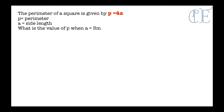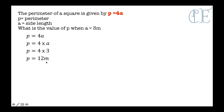The perimeter of a square is given by p equals 4a, where p is the perimeter and a is the side length. What is the value of p when a equals 3 meters? The formula is p equals 4 times a. A is 3, so p equals 4 times 3, so p equals 12 meters. It's 12 meters because a was 3 meters, so the answer must also be in meters.